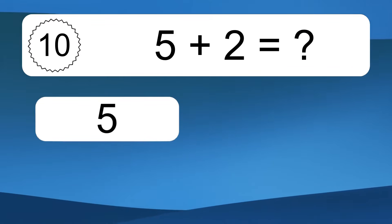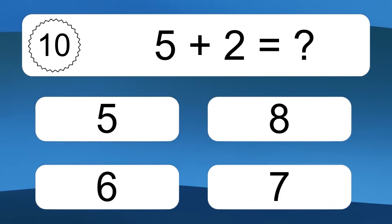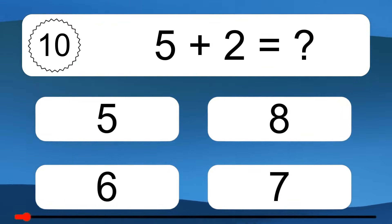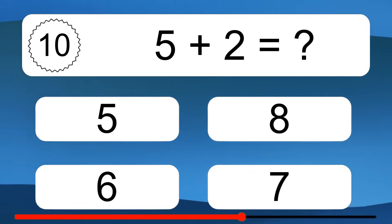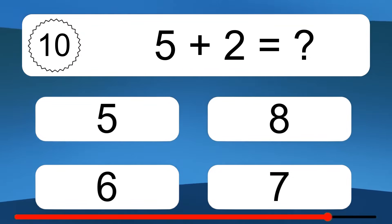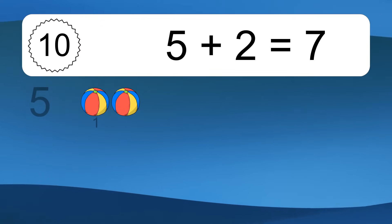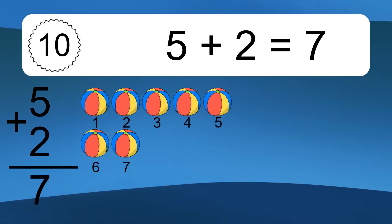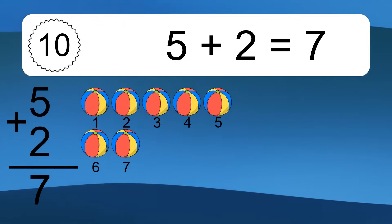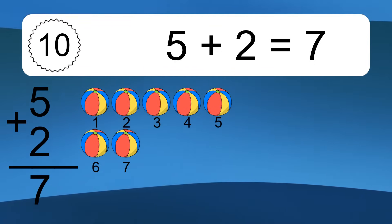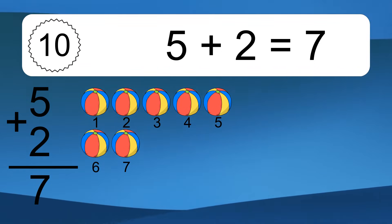5 plus 2 equals what? 5 plus 2 equals 7. Let's count it. 1, 2, 3, 4, 5, 6, 7.